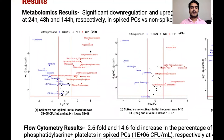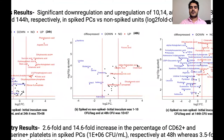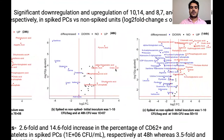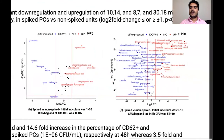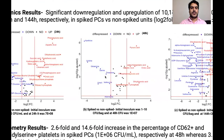Interestingly, aspartic acid, dihydroorotic acid, and orotic acid were highly up-regulated at all three time points, as you can see here. These can be explored further as metabolic markers for bacterial contamination.